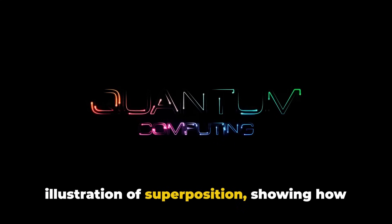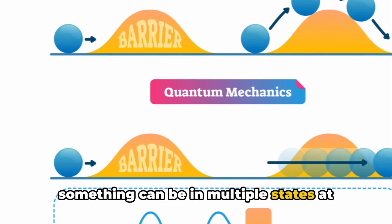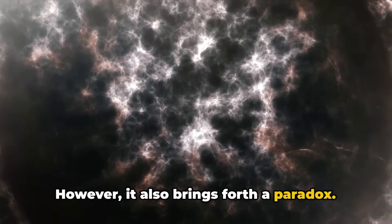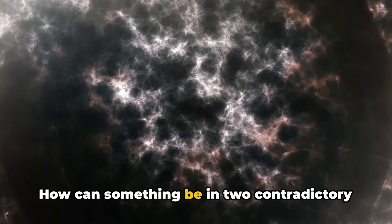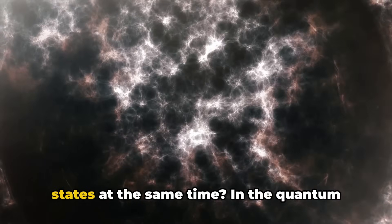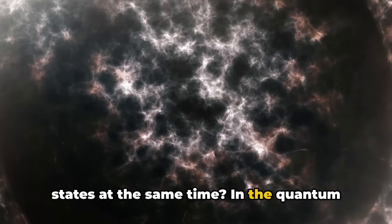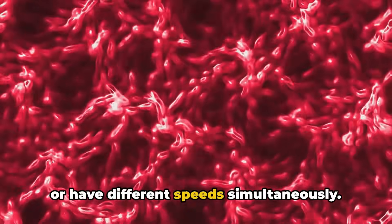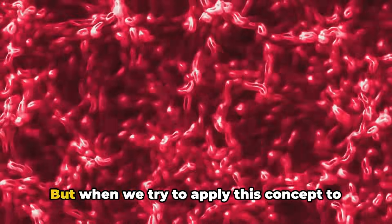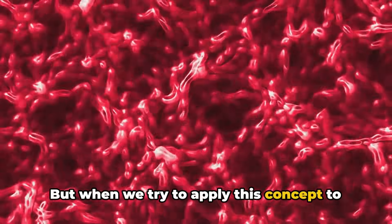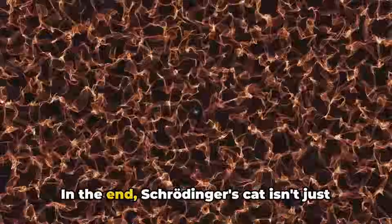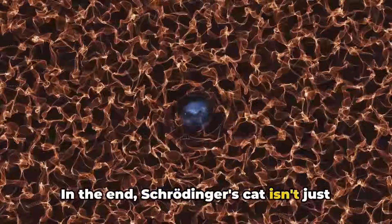This thought experiment is a vivid illustration of superposition, showing how something can be in multiple states at once until observed. However, it also brings forth a paradox: how can something be in two contradictory states at the same time? In the quantum world, particles can be in multiple places or have different speeds simultaneously. But when we try to apply this concept to the macroscopic world, like our cat, it seems absurd.